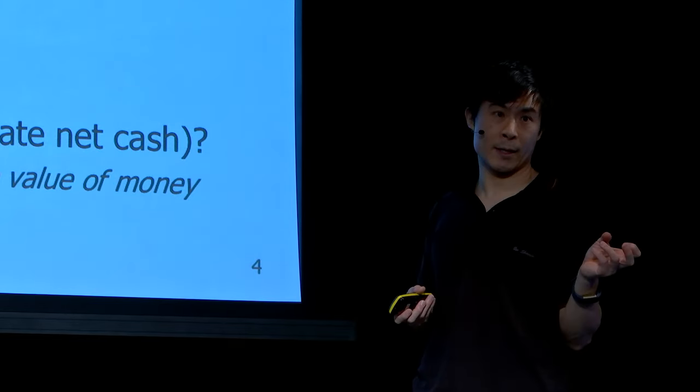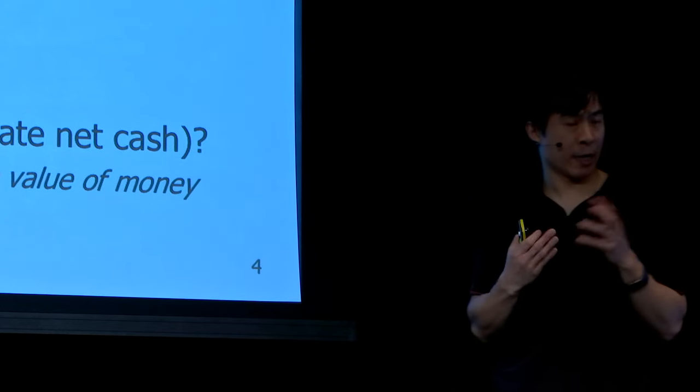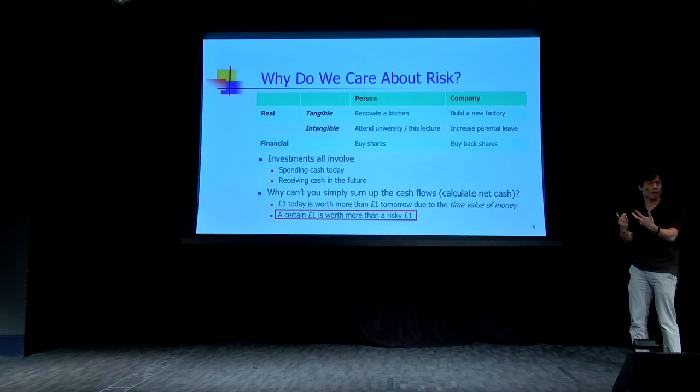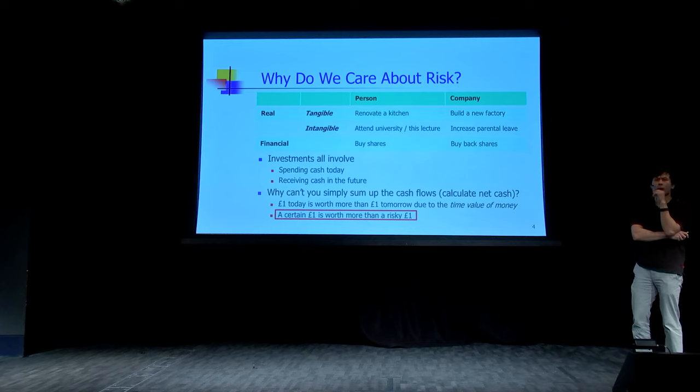Because the future cash flows are risky, we need to apply a risk discount for the fact that they are uncertain rather than safe. But there's a problem: how much should that risk discount be? It might be perfectly subjective, because some people are risk-averse and others are risk-neutral.